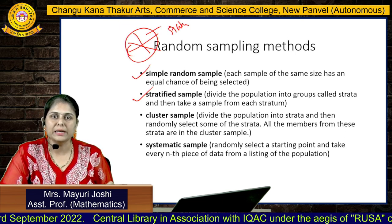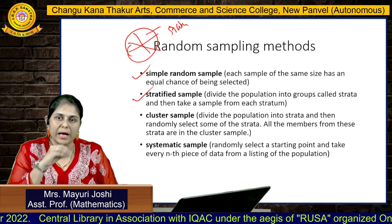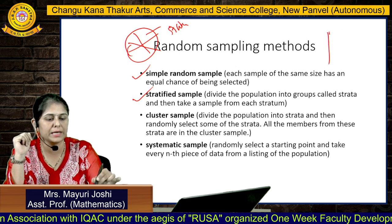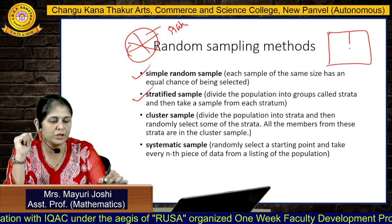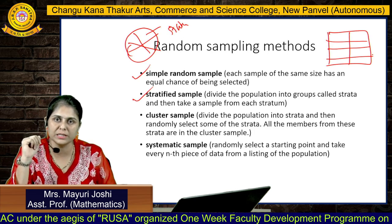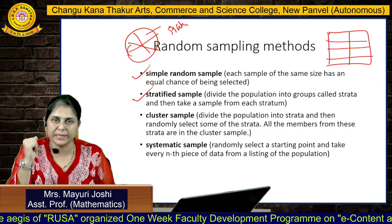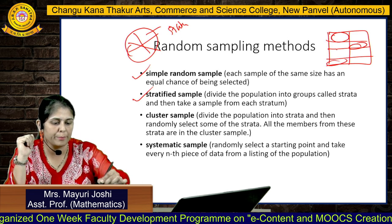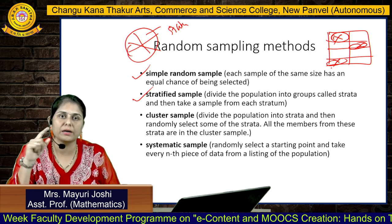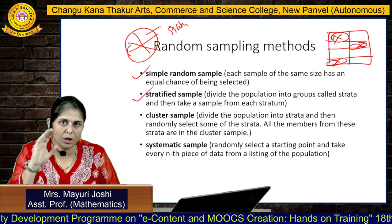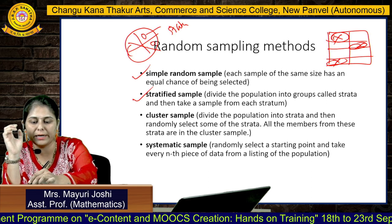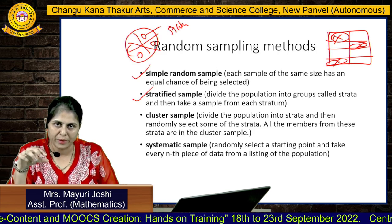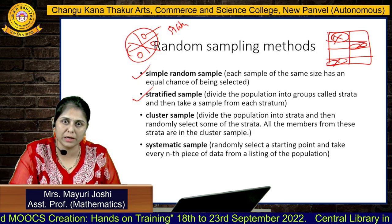We select a sample from each stratum — that is called stratified sampling. Then there is cluster sampling. In cluster sampling, the whole population is divided into clusters. Clusters are similar to strata, but we select the whole cluster as the sample. In stratified sampling, we collect only a few observations from each stratum. This is the difference between stratified and cluster sampling. Then systematic sampling: we select every nth element from the population.